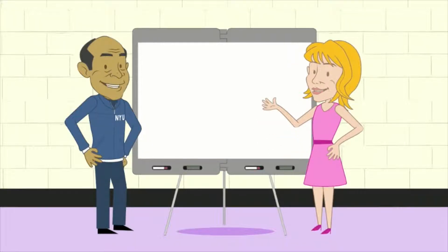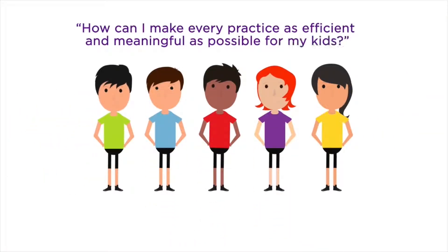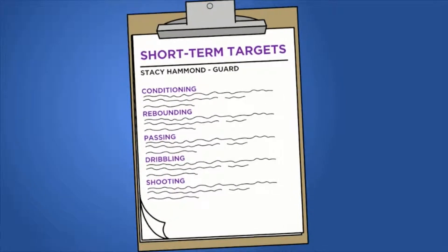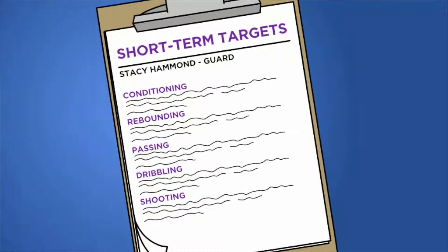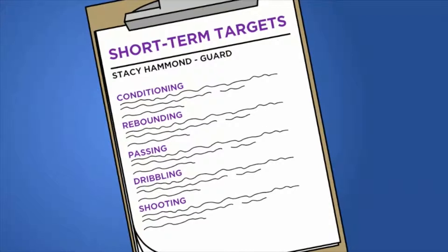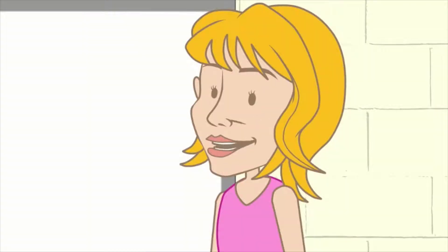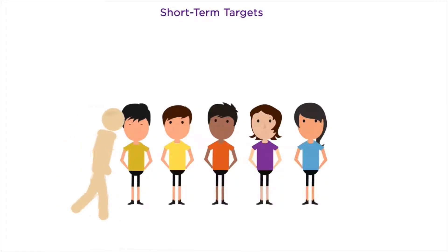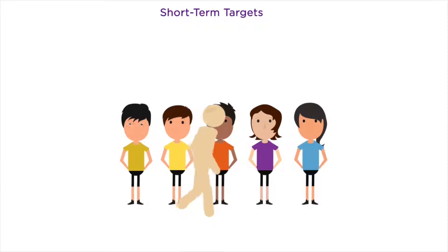Before each practice, ask yourself: how will you plan to make the session as efficient and focused as possible? Setting short-term individual targets focuses players on challenging themselves. By competing with themselves rather than their teammates, players are less likely to do the things that undermine the success of their team. Whether it's for individual players or for the team, short-term targets should be drawn from three categories.